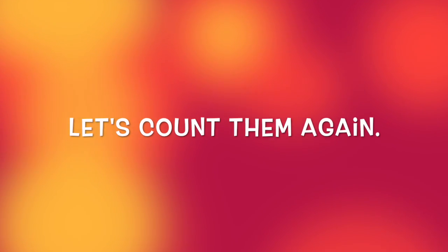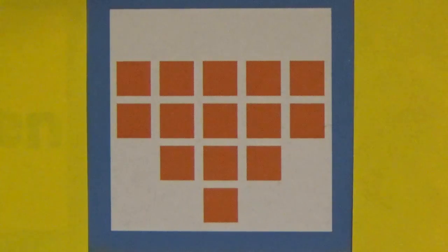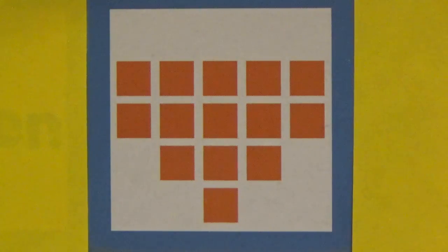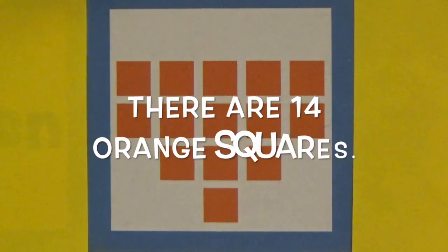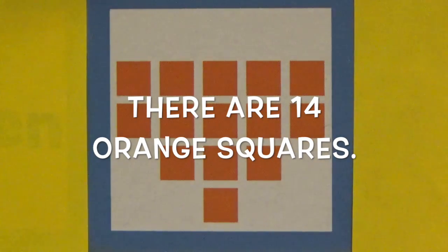Let's count them again. 1, 2, 3, 4, 5, 6, 7, 8, 9, 10, 11, 12, 13, 14. There are 14 orange squares.